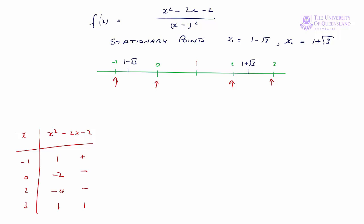Now that we've got our signs for the first derivative, let's complete the sign diagram. We see that below or to the left of 1 minus the square root of 3, the first derivative is positive, then it's negative. At x equals 1, both the function and the first derivative are undefined, so we indicate that we approach x from above and below. To the left of 1 plus the square root of 3, the first derivative is negative, and to the right it's positive.